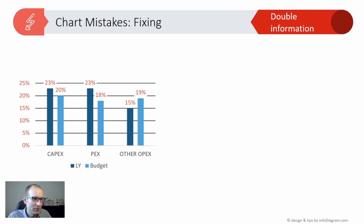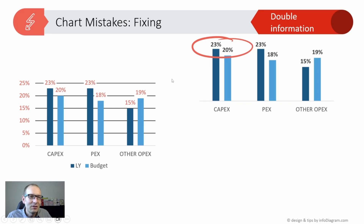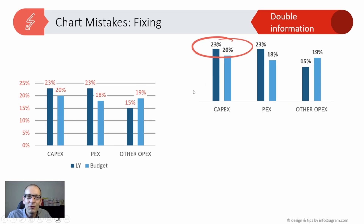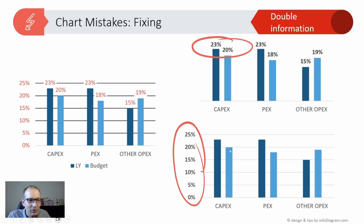With the red numbers here, the rule of thumb to help you decide which one to keep is to think about your audience. What is your audience expecting you to express? Are they focused on specific numbers — do they need to know exactly that this is 23 or 20? Or are they focused more on trends — knowing roughly that we're at about 90% compared to last year? If it's the latter, it's enough to just keep the axis and remove the number labels on the bars.